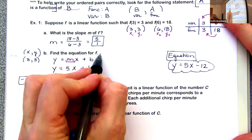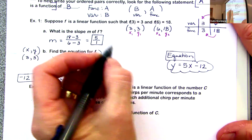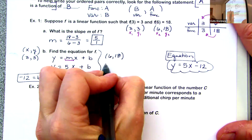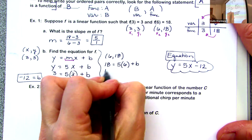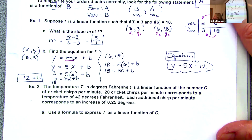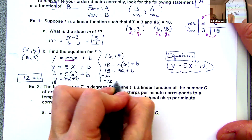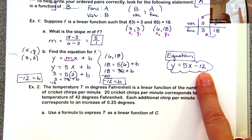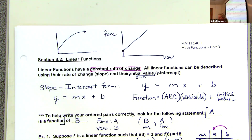What if we chose the other ordered pair (6, 18)? Substituting: 18 = 5(6) + b → 18 = 30 + b → b = −12. It does not matter which ordered pair you choose — you will get the same b. That b is the y-intercept, or initial value.